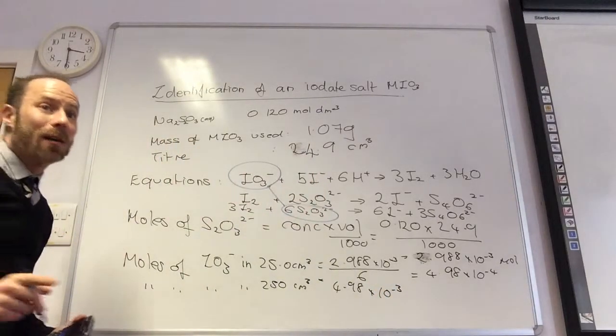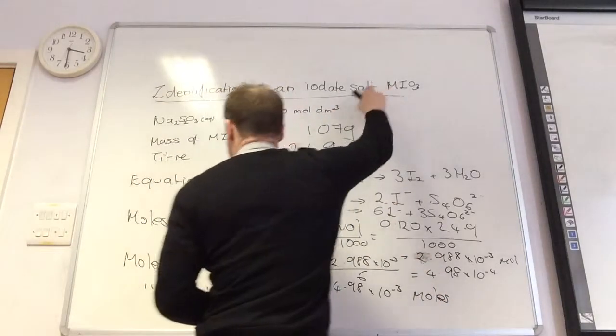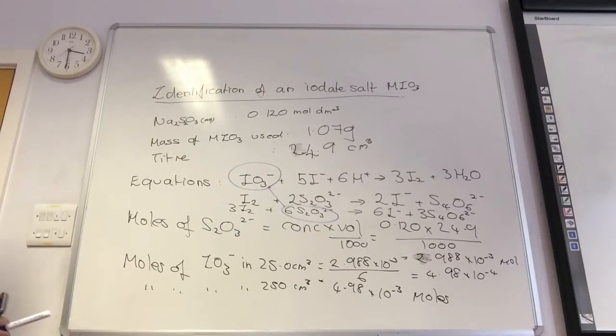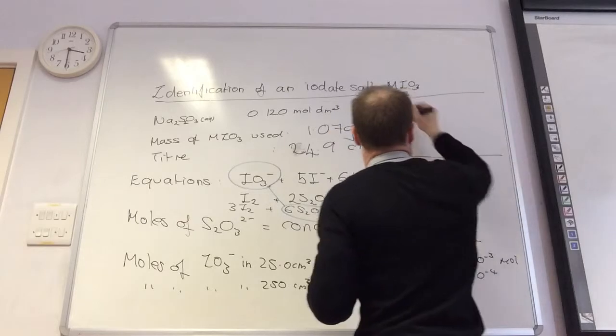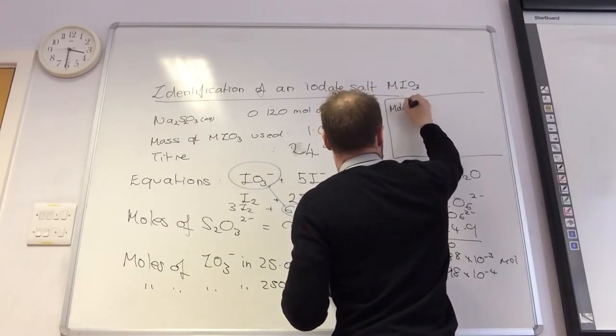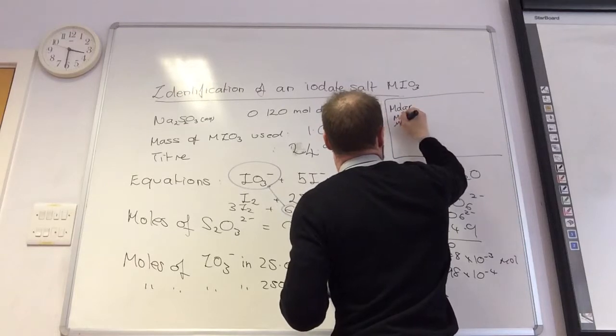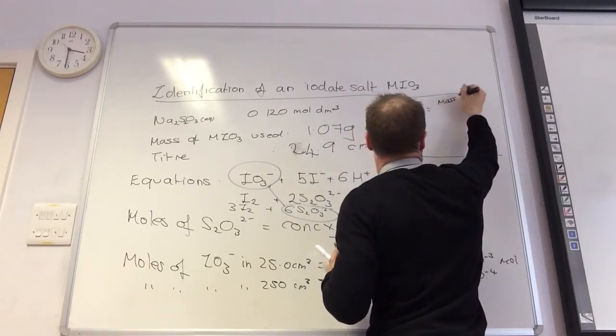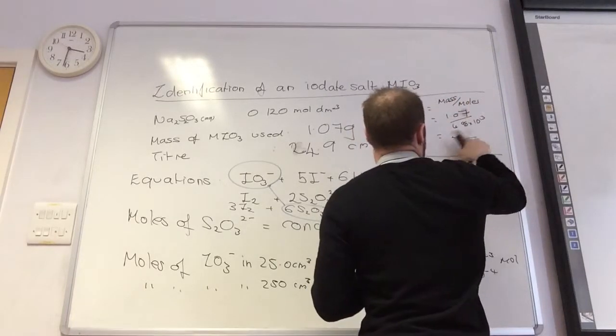So I found my moles. What do I want to find in order I can find my unknown metal here? I need to work out the molar mass. So molar mass of MIO3 is equal to mass over moles.